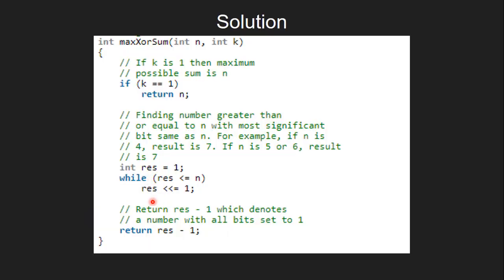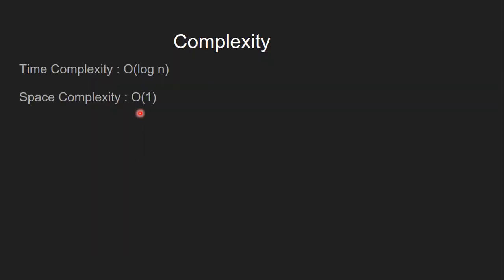We can also see here in the code, once we exit out of the loop, we subtract res by 1 to make all bits set to 1, and we simply return the value. The time complexity of this approach is O(log n), and the space complexity is O(1).